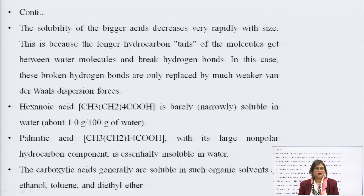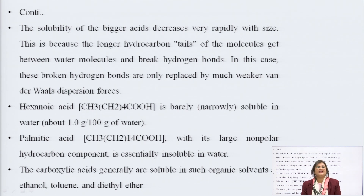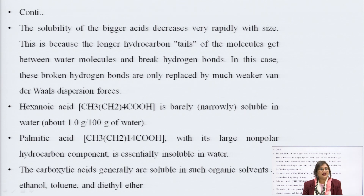As the chain length of the alkyl group increases, hydrogen bonding diminishes and van der Waals dispersion forces increase, though these are much weaker. Hexanoic acid is barely soluble in water — about 1 gram per 100 grams — due to its 6-carbon alkyl chain. Palmitic acid, with its large non-polar hydrocarbon component, is insoluble in water. Carboxylic acids are generally soluble in organic solvents such as ethanol, toluene, and diethyl ether.